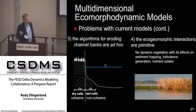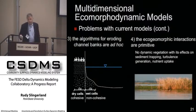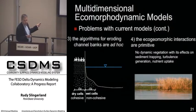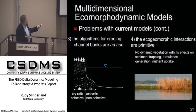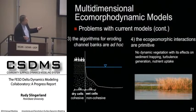Problem number three: the algorithm for eroding channel banks is ad hoc in Delft. Here's the problem — you have a wet cell and a dry cell with a cohesive bank. If discharge wants to increase and the channel should widen, there's no way for Delft to widen the channel because there's no water above to erode and no lateral erosion mechanism. The workaround is to take a proportion of the predicted erosion and apply it laterally, with a user-specified proportionality constant — we can't have that. Additionally, the echomorphodynamic interactions are primitive in Delft, so we need improvements on how vegetation growth traps sediment and creates turbulence.